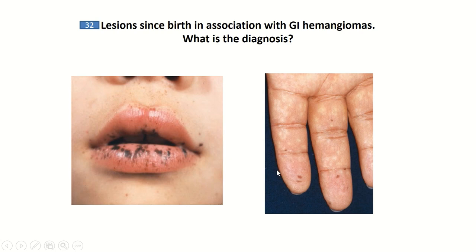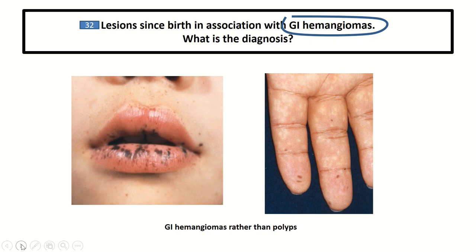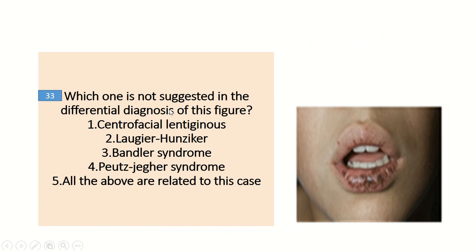This patient manifests with pigmentation on the lip and digits. When the question mentions lentigines on the lip, digits, and oral cavity along with longitudinal melanonychia, three diagnoses should be considered: Peutz-Jeghers, Laugier-Hunziker, and Bandler. If the history mentions GI hemangiomas, the diagnosis is Bandler. If instead GI polyps are mentioned, the diagnosis is Peutz-Jeghers. So here the diagnosis is Bandler syndrome.